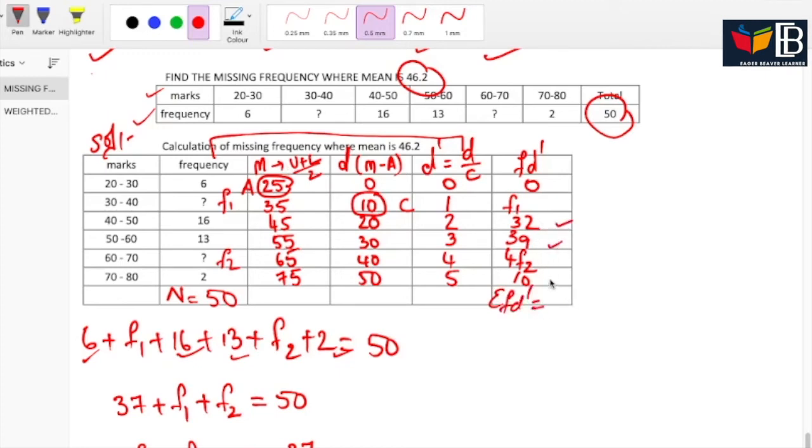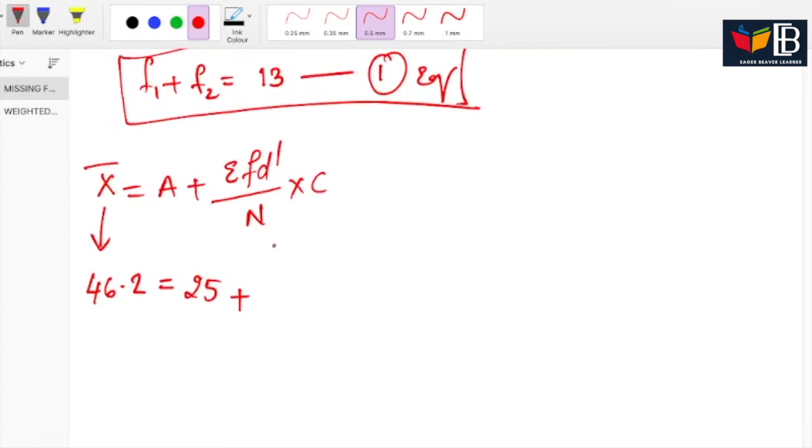Add all this: summation FD complement equal to 81 plus F1 plus 4F2. Add 32, 39 plus 10 plus F1 plus 4F2. So write it down here: summation FD complement is 81 plus F1 plus 4F2 by N, which is 50, into C, which is 10. Now send this 25 to this side: 46.2 minus 25.